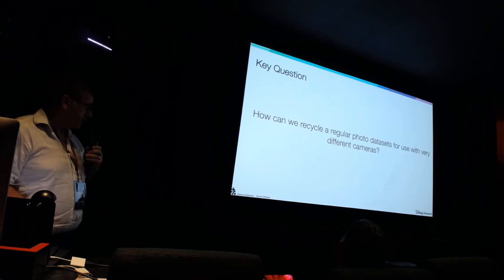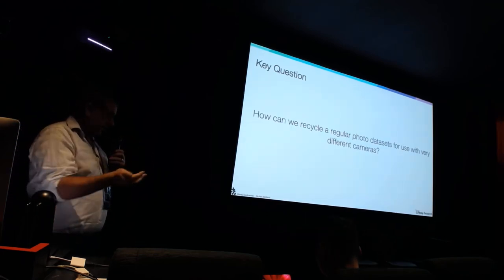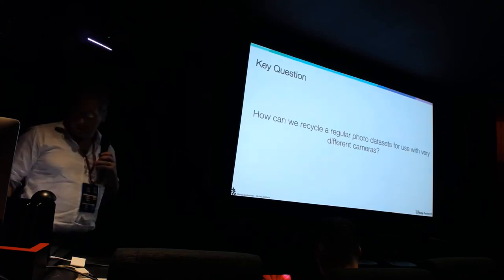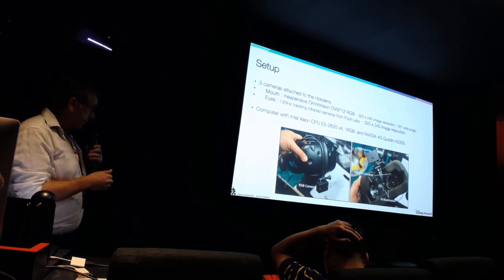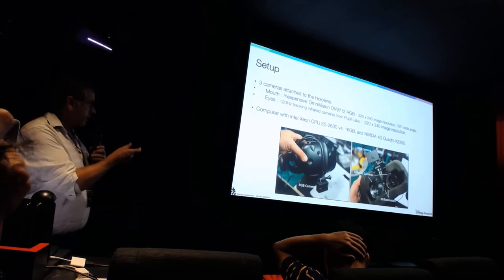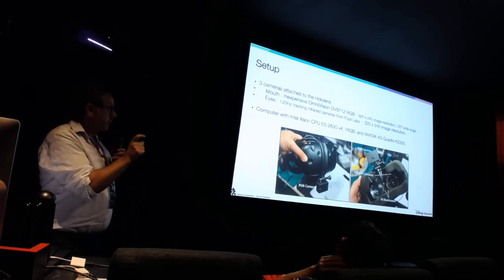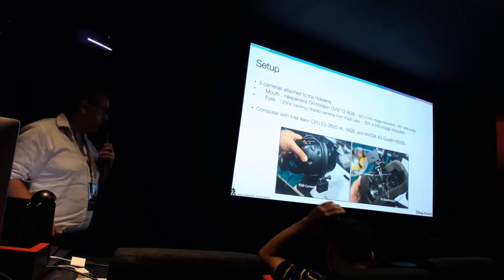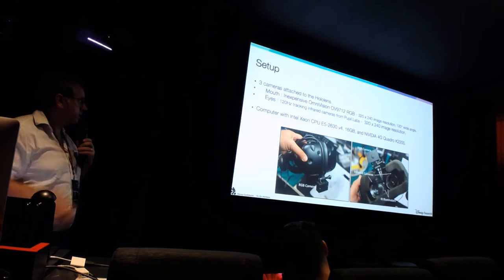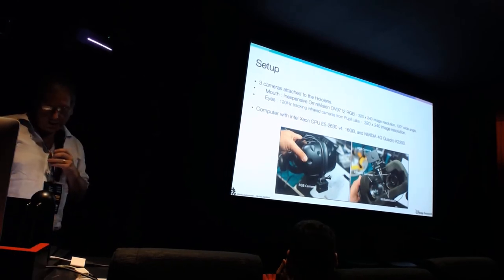So that leads us to a key question: how can we recycle some of these existing datasets for use with very different cameras? A bit more detail on our camera setup: a really cheap, quite low-resolution camera with a wide angle of view, so we can cover the lower region of your face at close distance. The eye-tracking cameras are 120Hz from Pupil Labs — again quite low resolution.